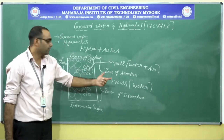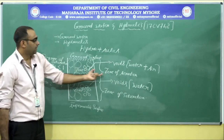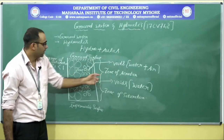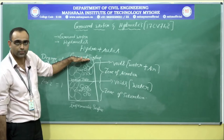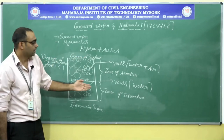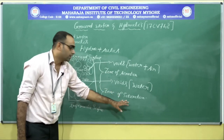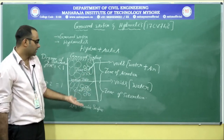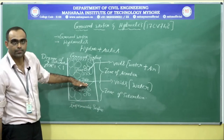If asked to define the zone of aeration, you can say: it is the part of vertical distribution of groundwater that exists beneath the surface of the earth and above the water table. If asked to define the zone of saturation: it is the part of vertical distribution of groundwater that exists above an impermeable surface and below the water table.